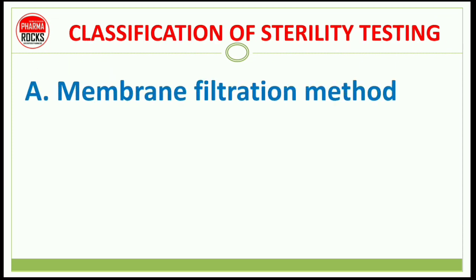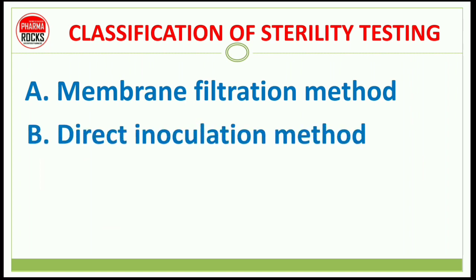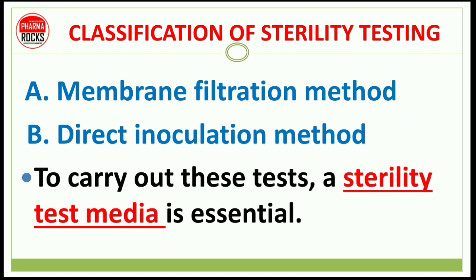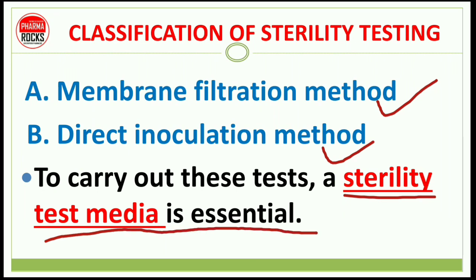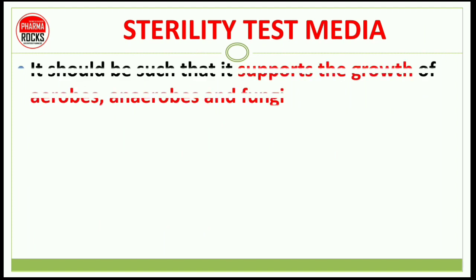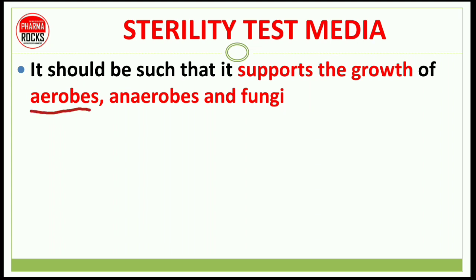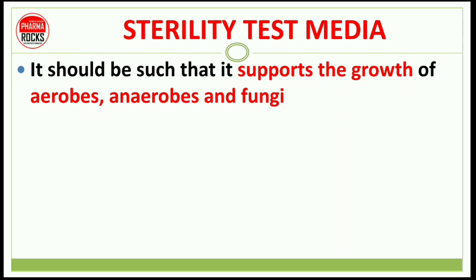Classification of sterility testing is based on two methods: membrane filtration method and direct inoculation method. To carry out this test, a sterility test media is essential. यह दो main techniques use की जाती हैं. The sterility test media should be such that it supports the growth of aerobes, anaerobes, and fungi — different types of microorganisms including aerobics, bacteria, anaerobics, and fungi.